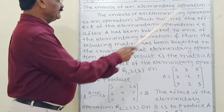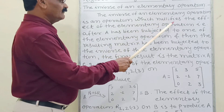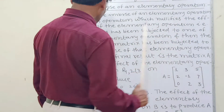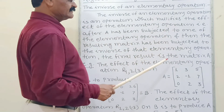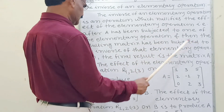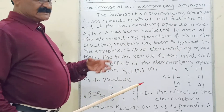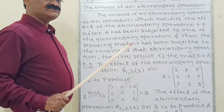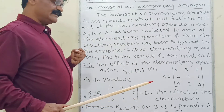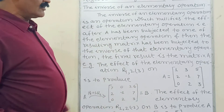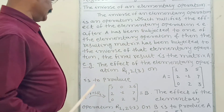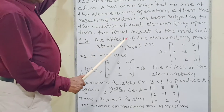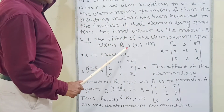The inverse of an elementary operation is an operation which nullifies the effect of the elementary operation. That is, after A has been subjected to one of the elementary operations and then the resulting matrix has been subjected to the inverse of that elementary operation, the final result is the matrix A. For example, the effect of the elementary operation R1,2(3) on A is: